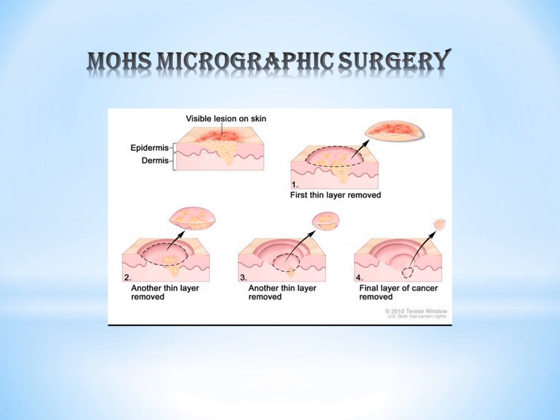If cancerous cells are present, the procedure is repeated — another thin layer is removed and placed under the microscope to examine, as shown in figure 2. After removing another thin layer, it is also examined under the microscope. This continues until a final layer free of cancer is removed. Once a thin layer comes back as entirely healthy, the procedure is terminated.